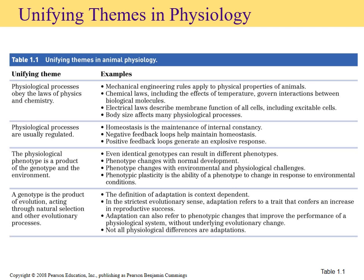Take a look at table 1.1, which highlights the unifying themes mentioned earlier. Regardless of what animal model we look at, there will always be some laws of physics and chemistry that organisms follow. For example, chemical laws include the effects of temperature and how molecules interact — do you have hydrogen bonds, covalent bonds? Electrical laws would include things like action potential, resting membrane potential, depolarization, and repolarization.